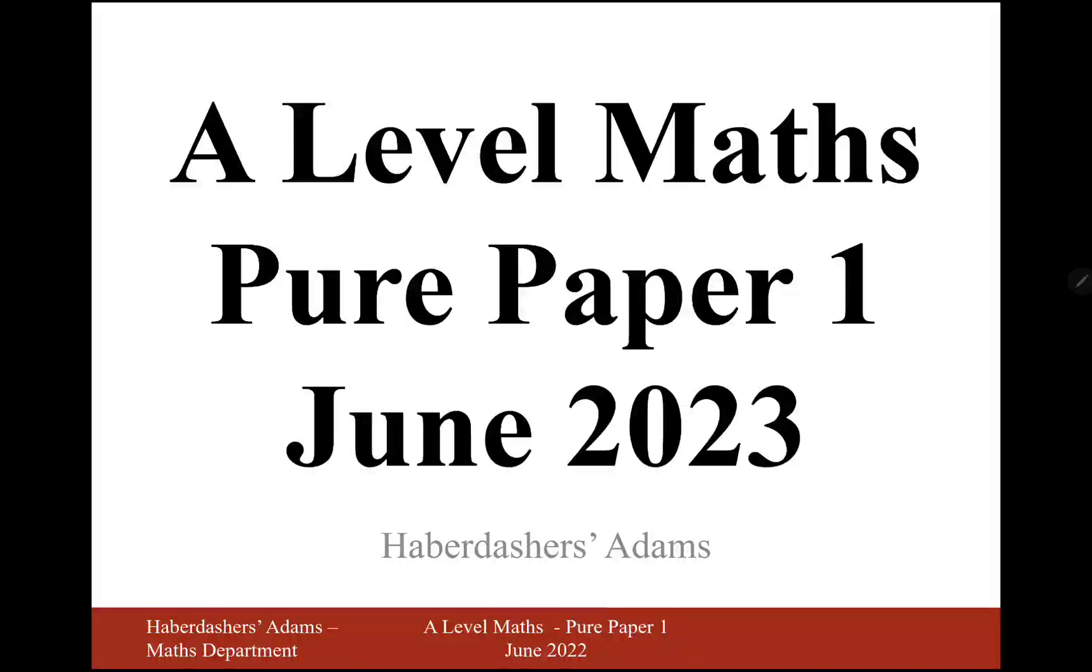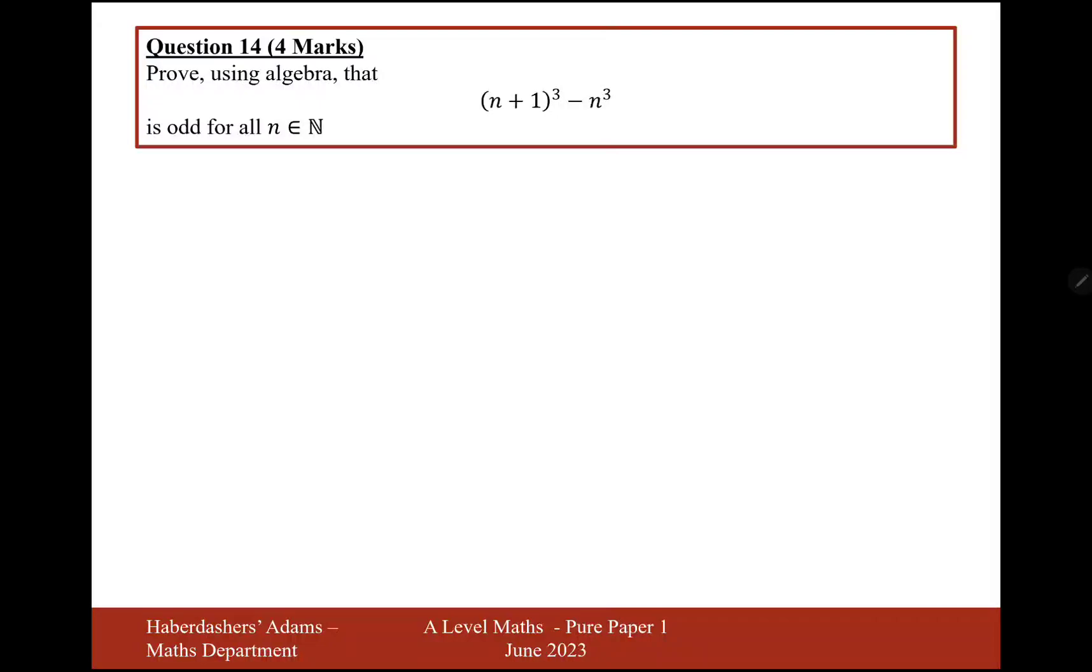Hello there, welcome to the A-level maths, pure paper 1 of June 2023. Here we're looking at question 14. Prove using algebra that n plus 1 cubed minus n cubed is odd for all n existing in the natural numbers.